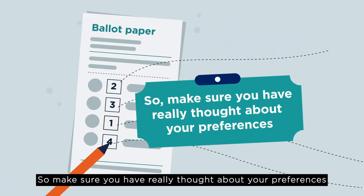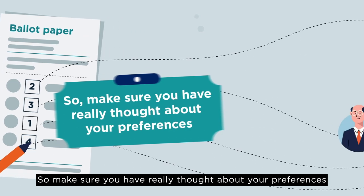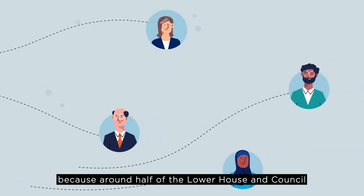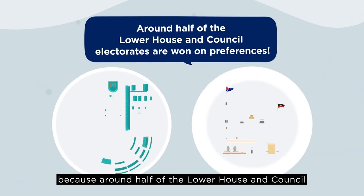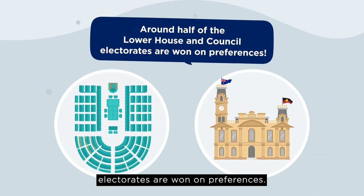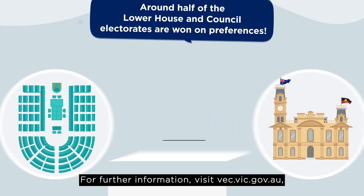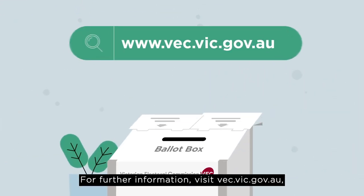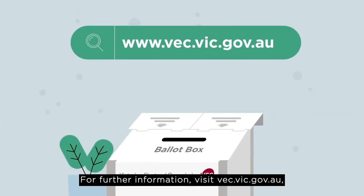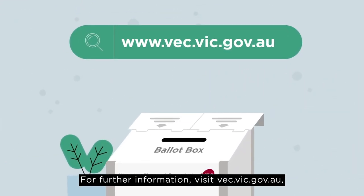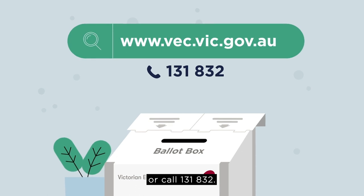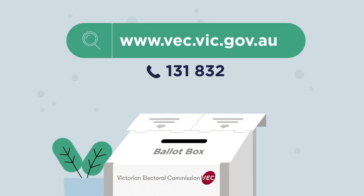So make sure you have really thought about your preferences, because around half of the lower house and council electorates are won on preferences. For further information, visit vec.vic.gov.au or call 131 832.